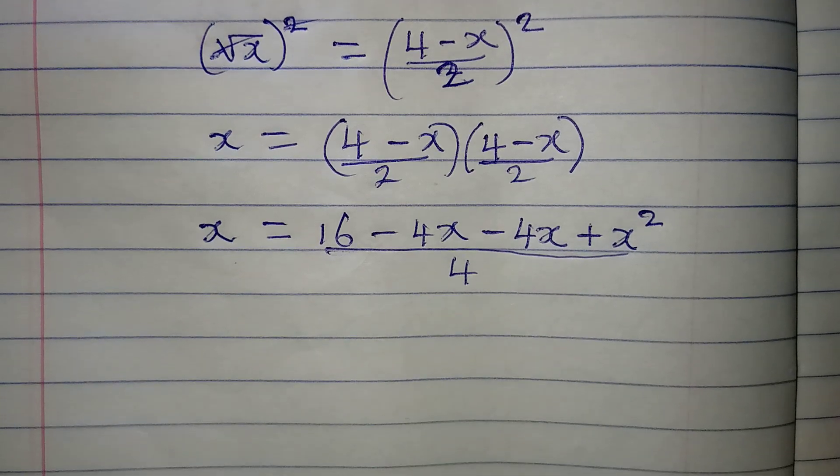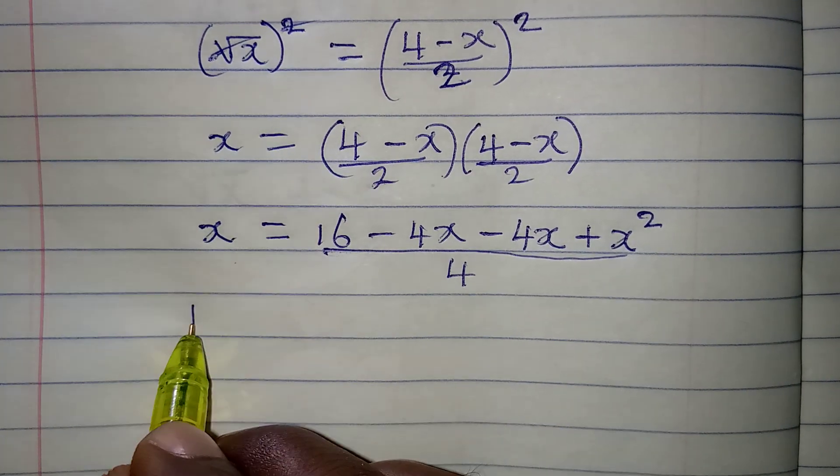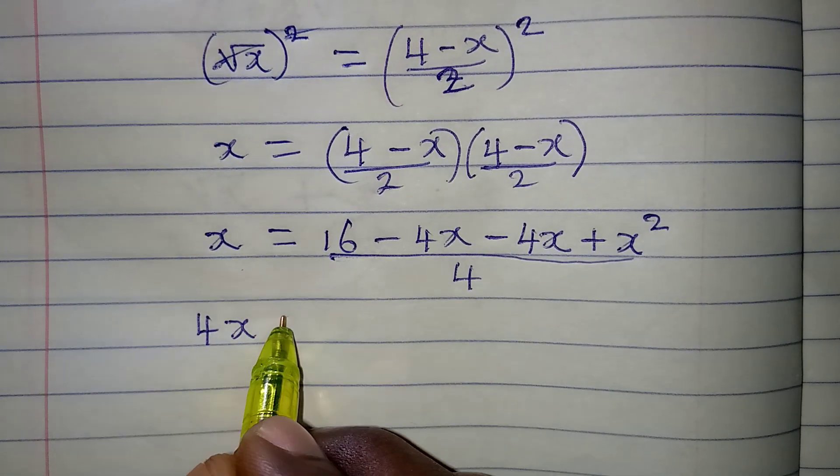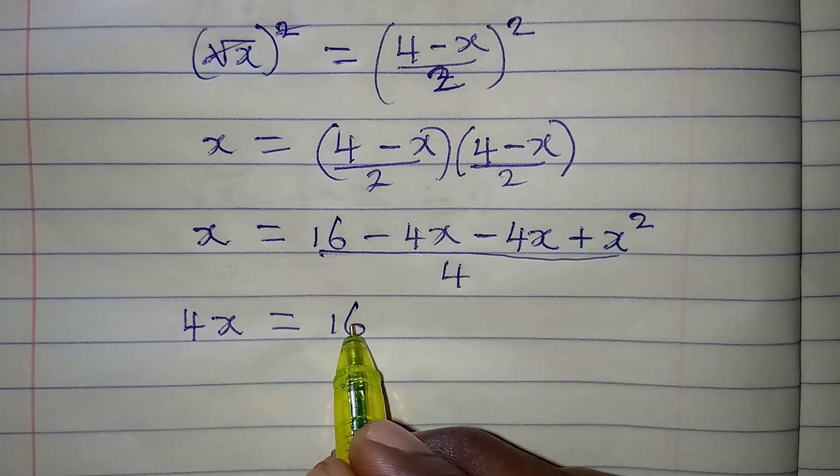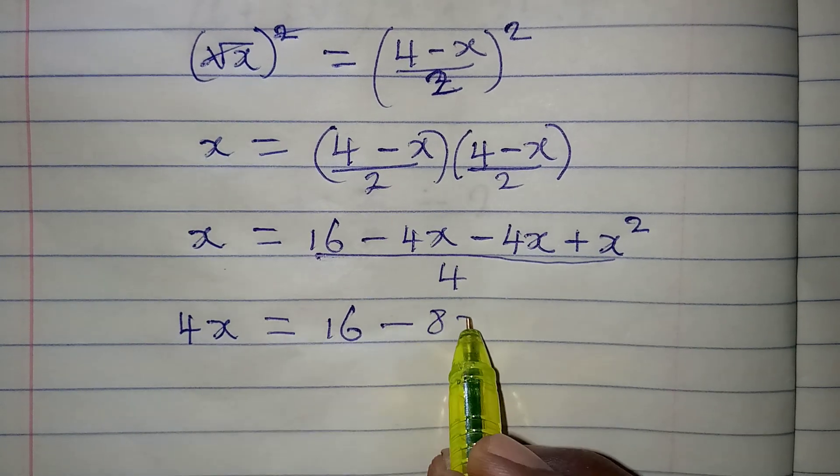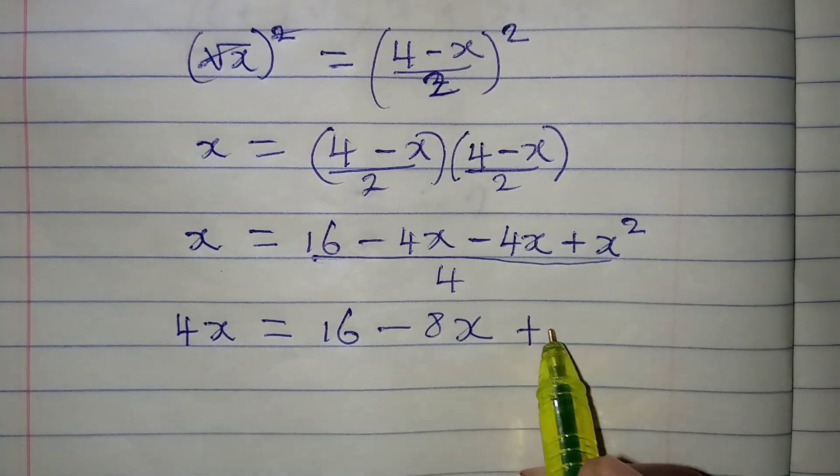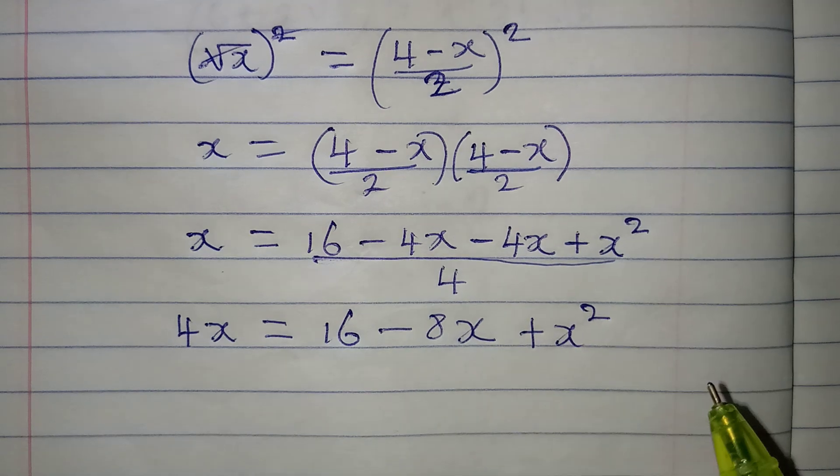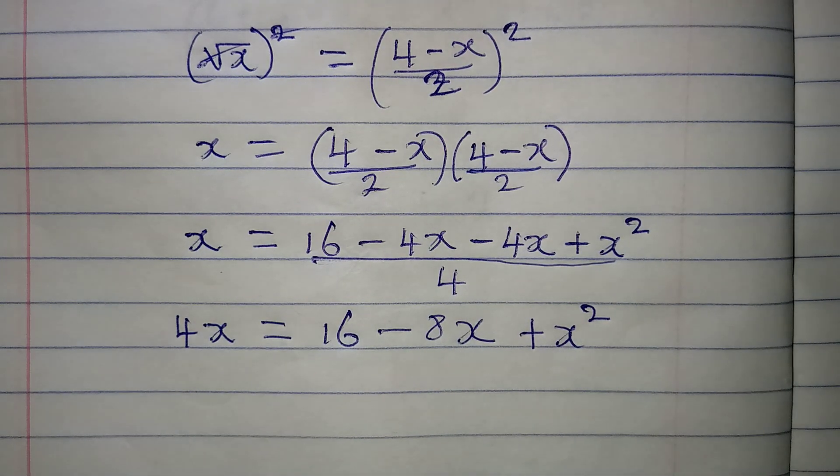So from here now, we would cross multiply so that we have 4x. And that will be equal to 16 minus 4x minus 4x is minus 8x. Then I have plus x squared.